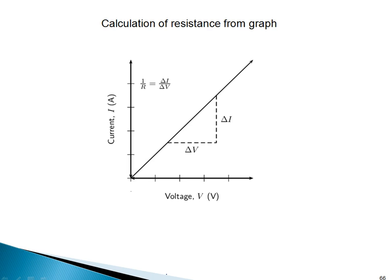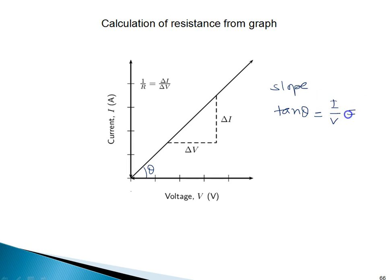From this graph, it is visible to all of you. If you calculate the slope of the graph, that is tan θ. You can write it as ΔI by ΔV, and this equals 1 by R. So R equals 1 by tan θ. The inverse of the slope gives the resistance.